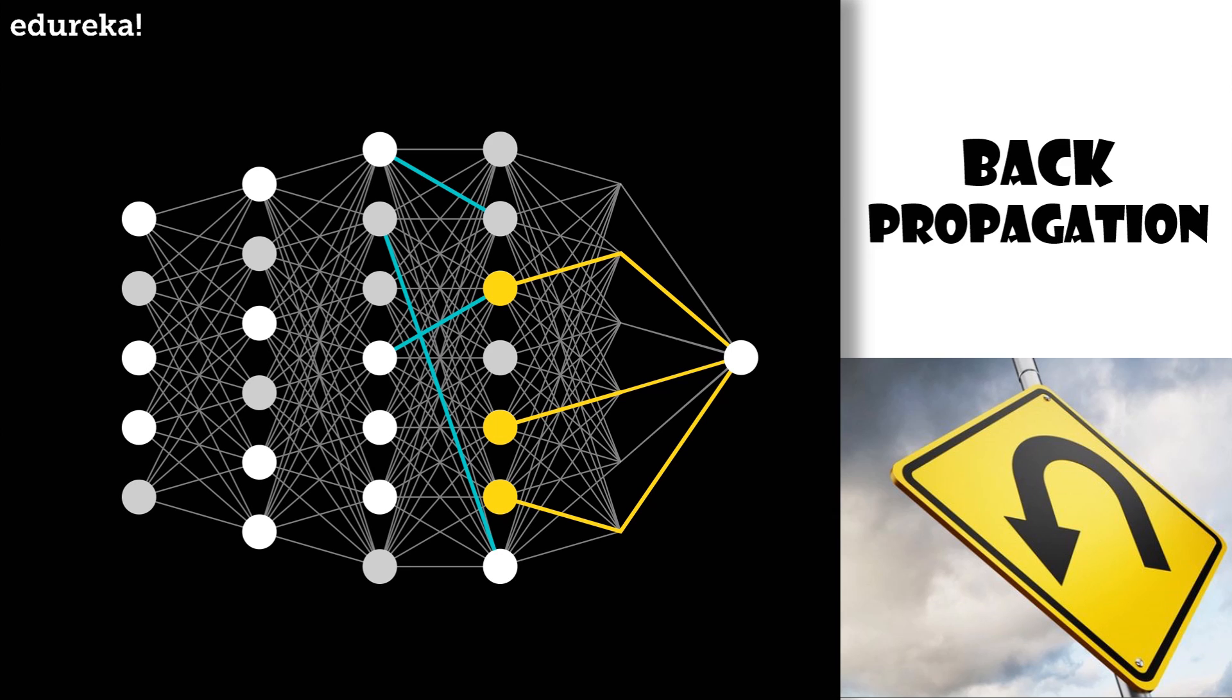This right here is where the idea of propagating backwards comes in. Once you have the idea of all the nudges you want to make to the second to last layer, you can recursively apply the same process to the relevant weights and biases that determine those values. Repeating the same process through and moving backwards the network.